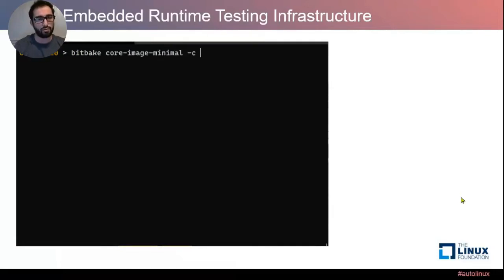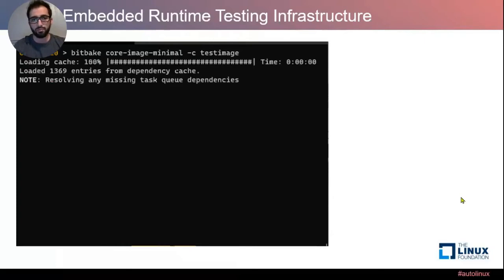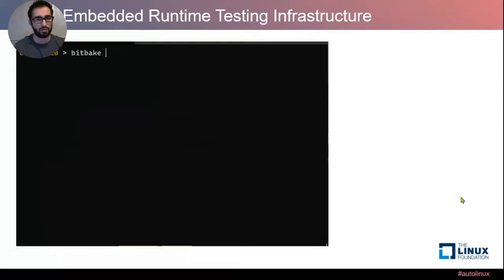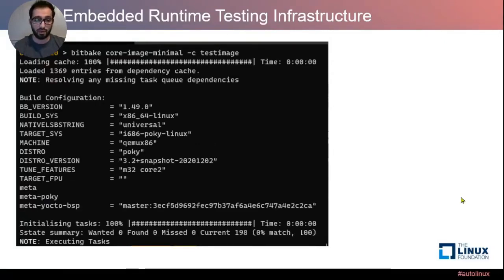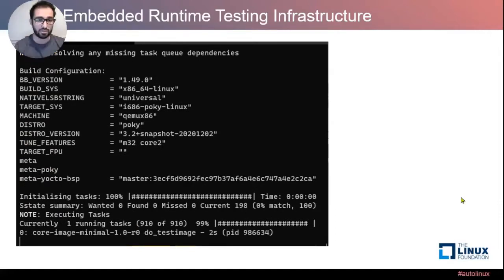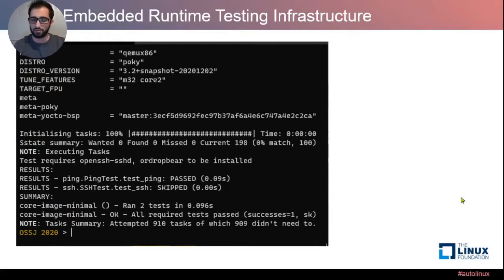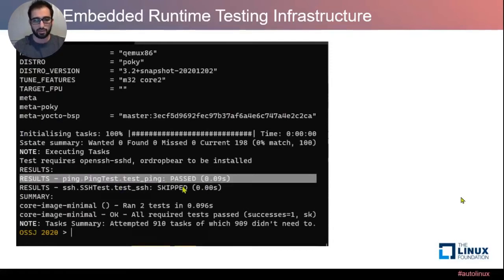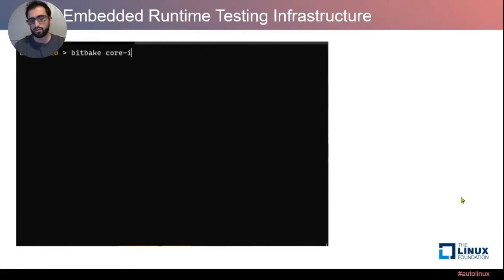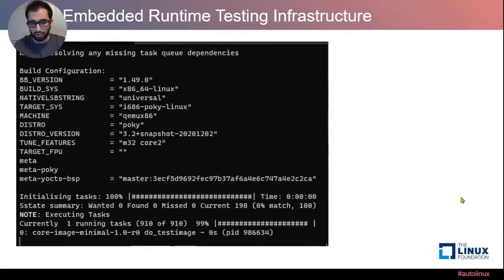To run the tests, you build the core image minimal and pass the test image task using dash-C. Assuming the image is already built, BitBake will run the test image task. You can see it running over a few seconds, and at some point you get results. In my example, it complained that I didn't put an SSH server on my image — so the ping test passed, and the SSH test was skipped. You can see the report of what passed, what was skipped, and what failed.